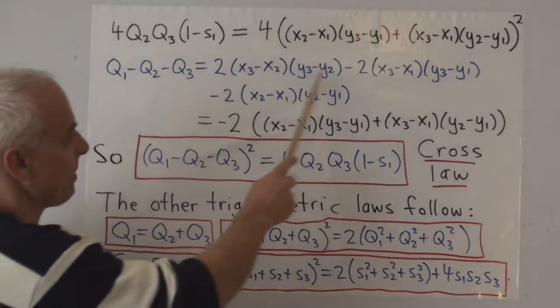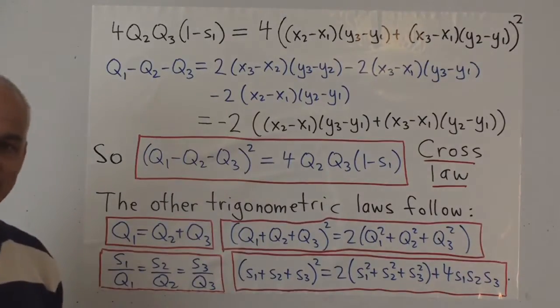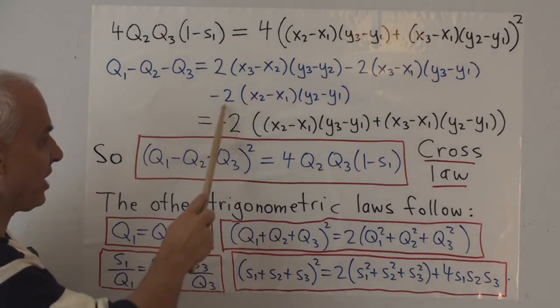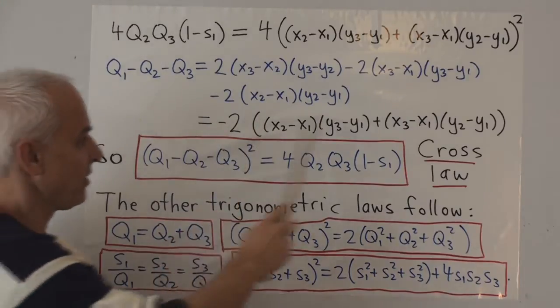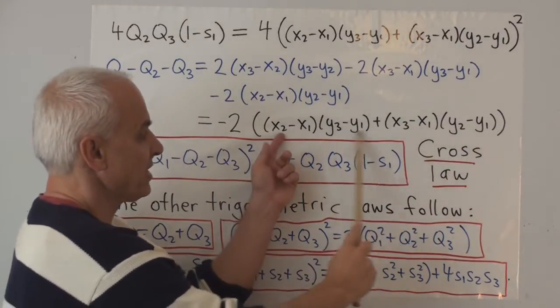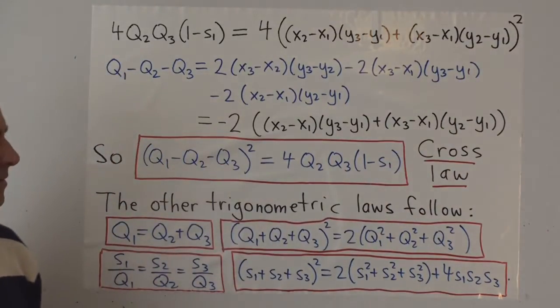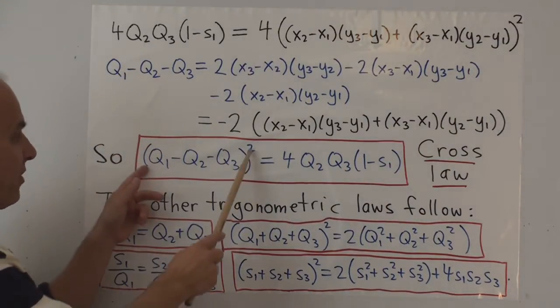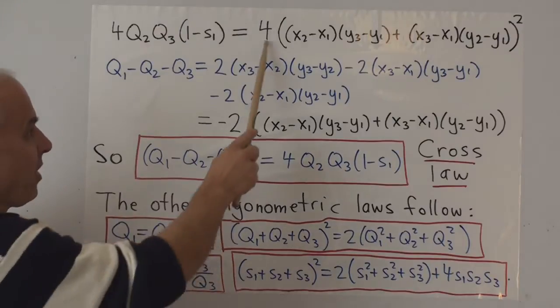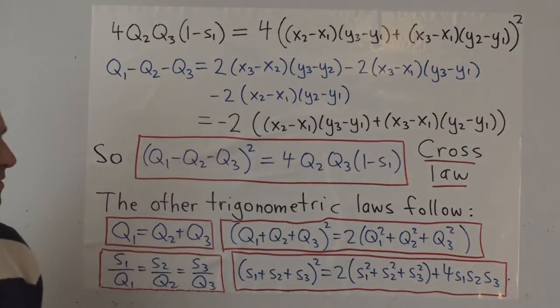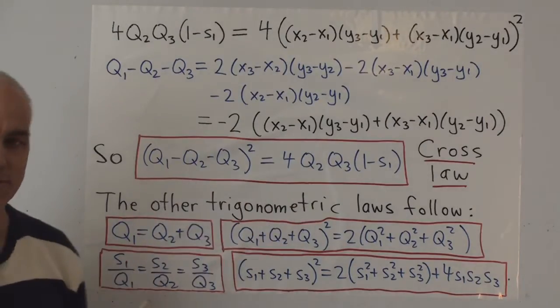And again, you have to expand all of these things out and there's some cancellation and then you collect terms. And then you can see that you can rearrange that as minus 2 times this expression here, where this expression is exactly the same as appearing up there. Telling us that if we square this, we're going to get a 4 times this thing squared. So we're going to get the right-hand side. And that establishes the cross law for us.